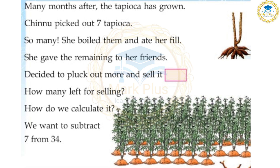Many months after, the tapioca has grown. Chinnu picked out 7 tapioca, then 8 tapioca. She boiled them and ate her fill. She gave the remaining to her friends. How many left for selling? How do we calculate it? We want to subtract 7 from 34.